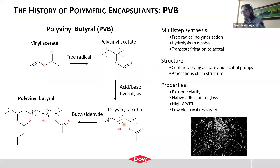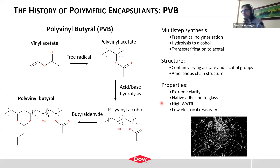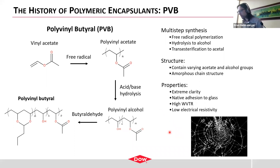This acid group enables PVB to have adhesion to glass without any additional formulation. For PV in particular, it unfortunately has a pretty high WVTR — it transmits water relatively quickly — and it has poor electrical resistivity. The most common application everyone is familiar with, of course, is safety glass, which has been used for about a century.